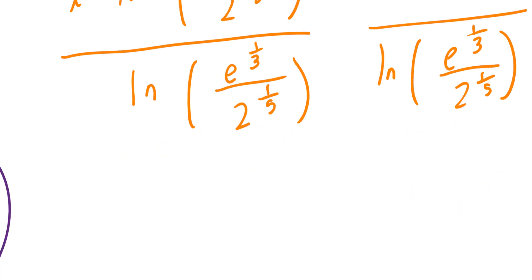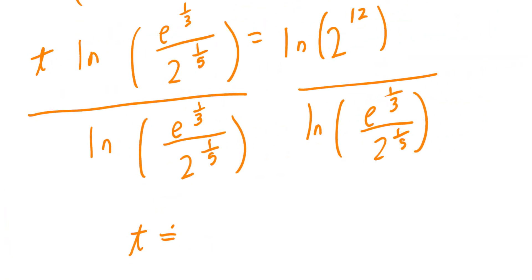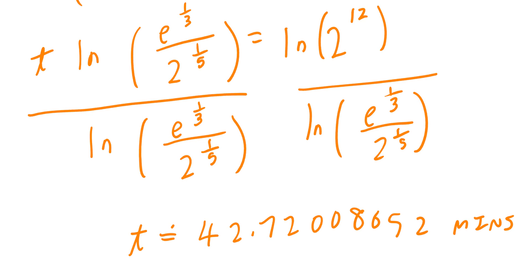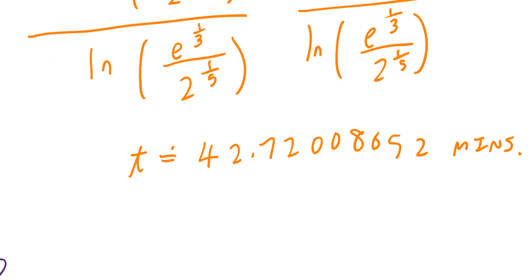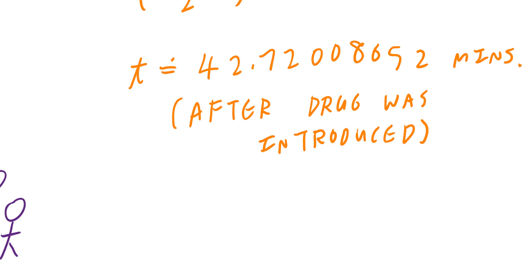Take your calculator and work it out. The display shows 42.72 minutes. This refers to the time after the drug was introduced. Rounding to one decimal place, time is approximately 42.7 minutes.